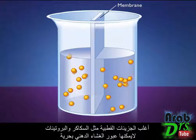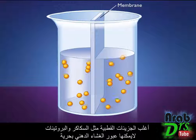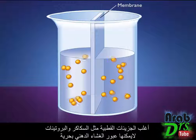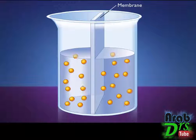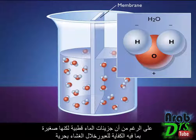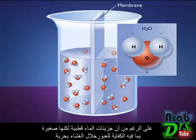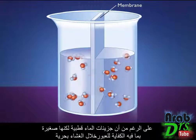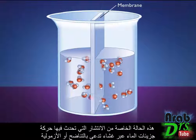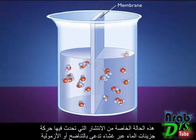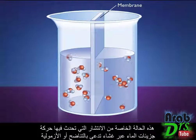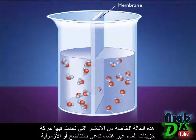Most polar molecules such as sugars and proteins cannot freely cross this lipid membrane. Although water molecules are polar, they are small enough to pass through the membrane freely. This special case of diffusion that involves the movement of water molecules across a membrane is called osmosis.